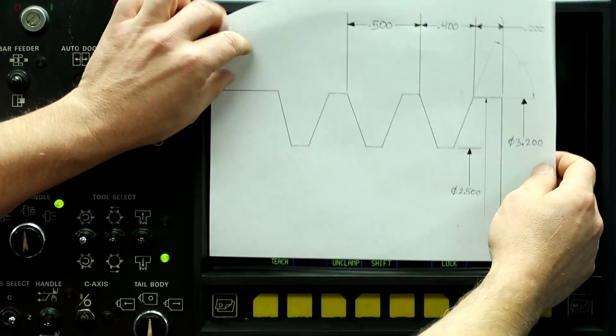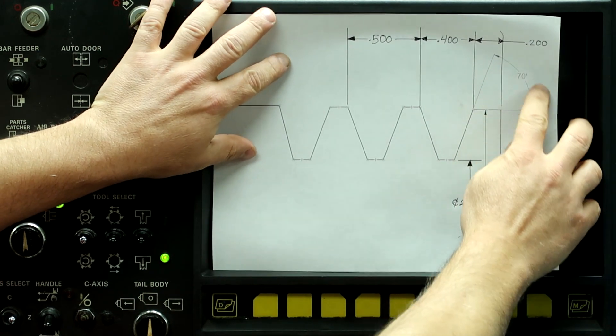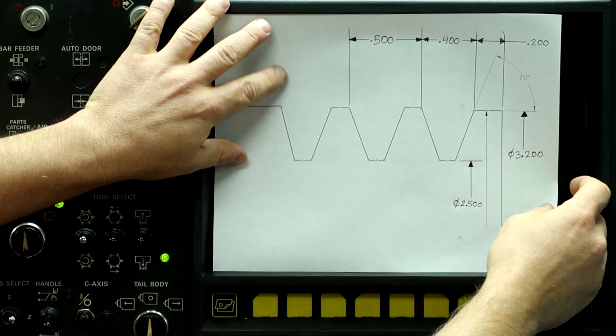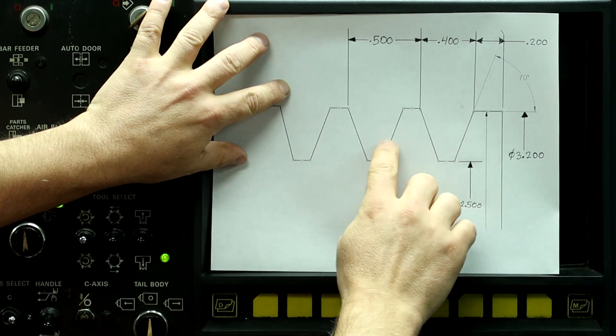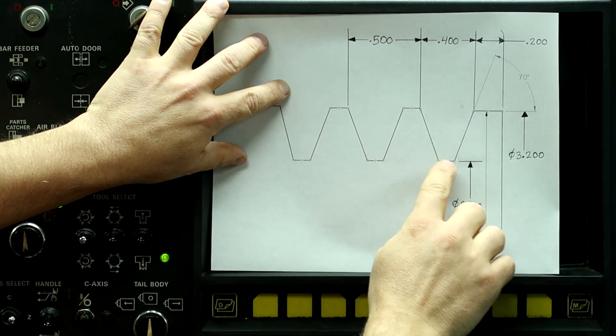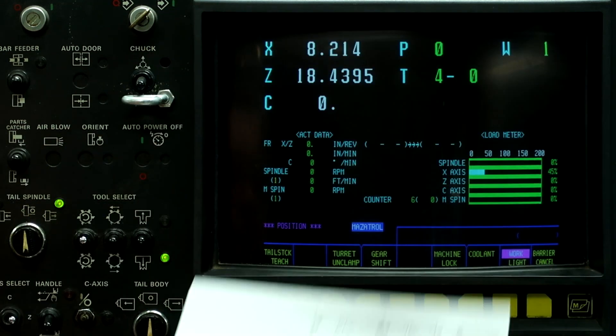Here's our sample workpiece that we're going to start programming. This is going to be a series of grooves. These are basically pulley grooves in the outside diameter of the part. So, let's get started making it now.